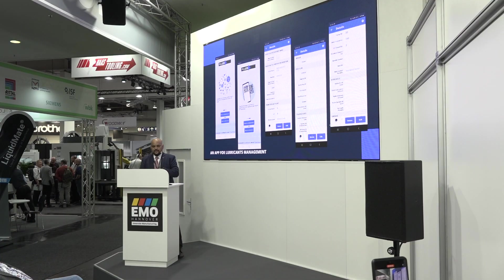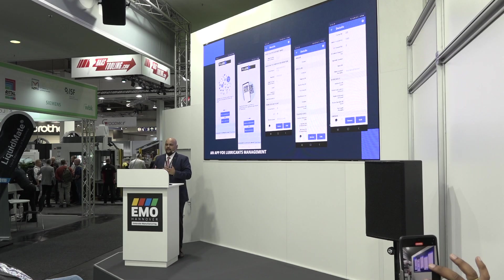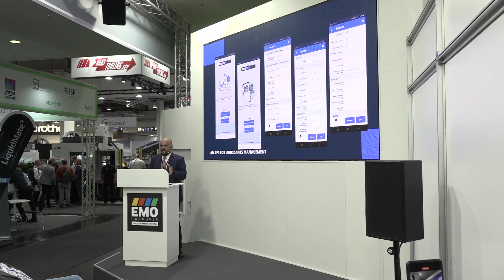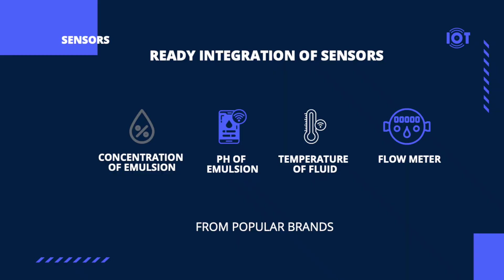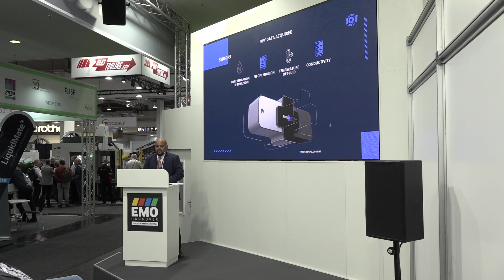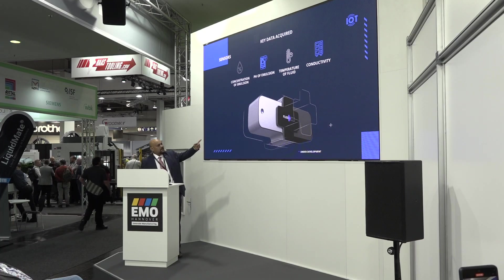Step one is this: we've made an app. Rather than jumping directly to automatic data from sensors, step one is go digital — implement app-based manual data feeding. Once you're there, you can move to automation of the data. Our software is ready for integration with legacy sensors which can give you concentration, pH, temperature, and flow meter readings. We're also developing a unique sensor which will give all four key aspects of water-soluble coolant — concentration, pH, temperature, and conductivity — in one go.